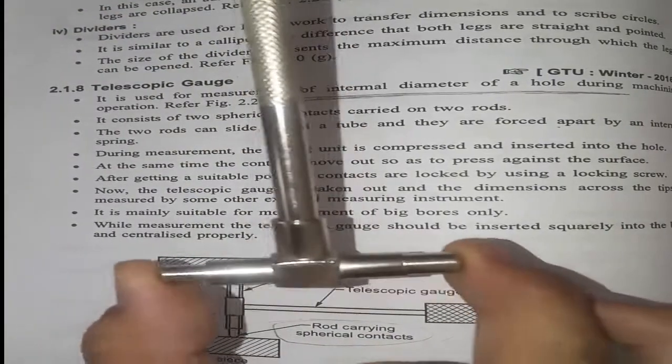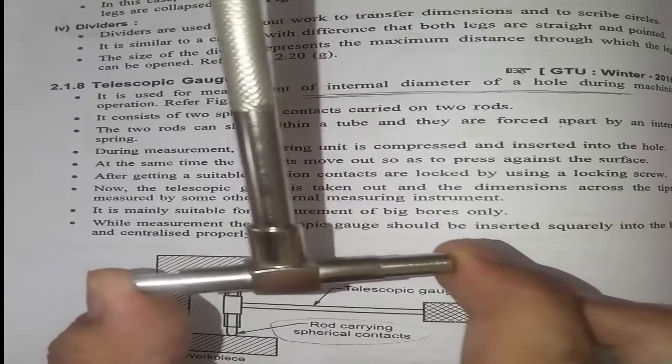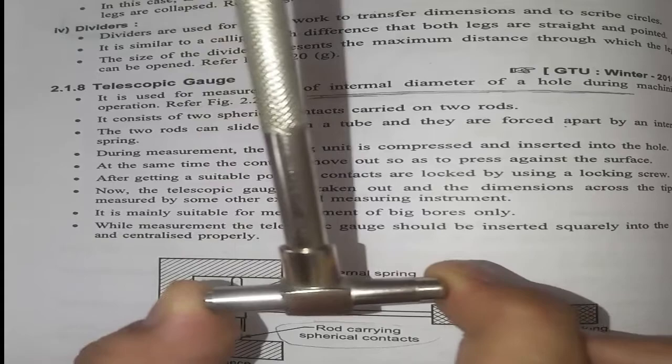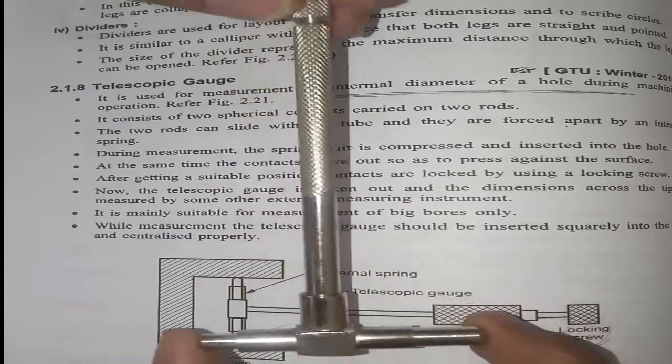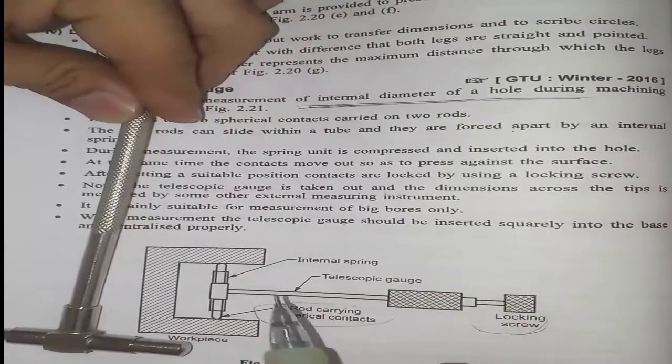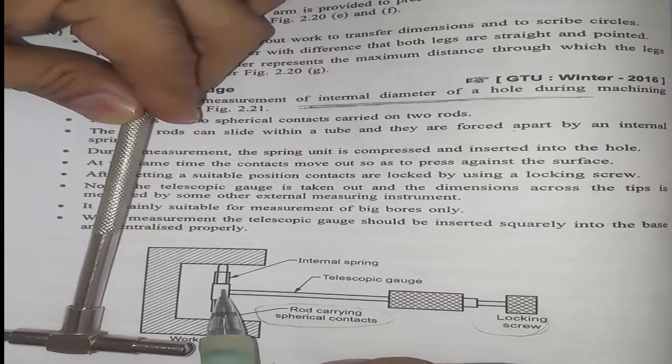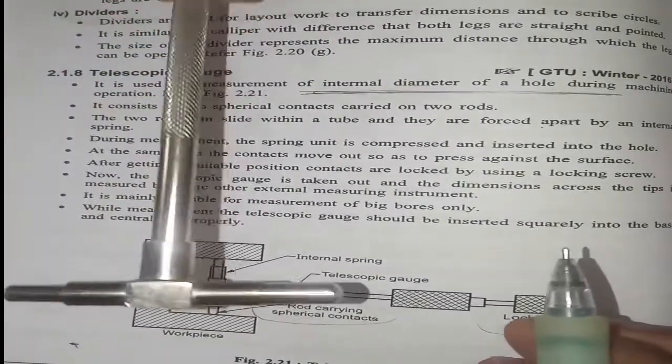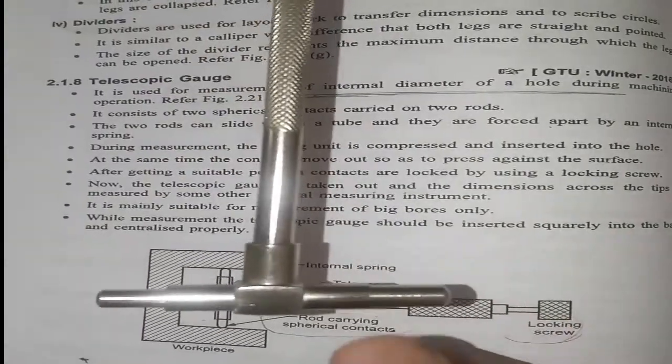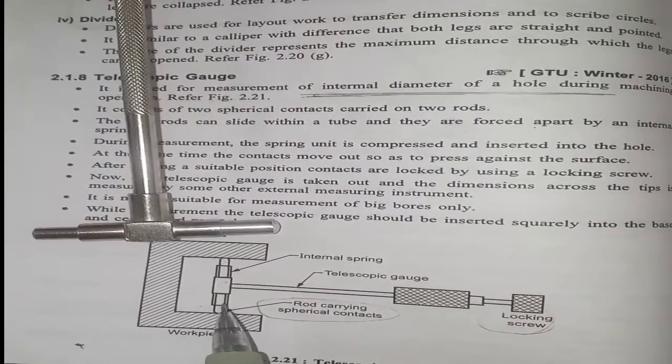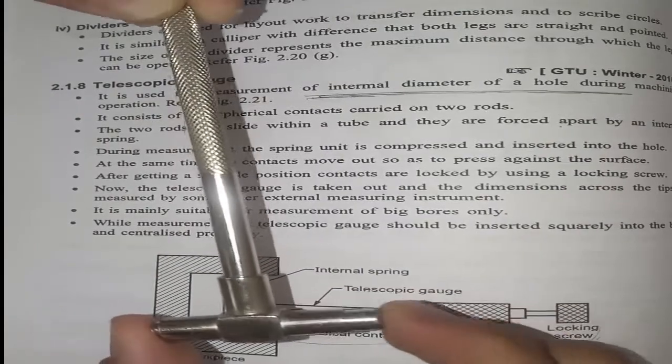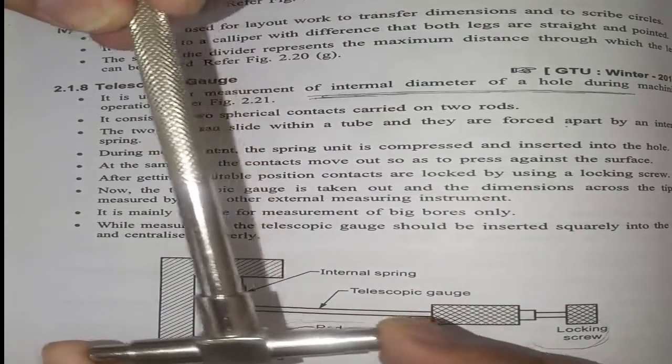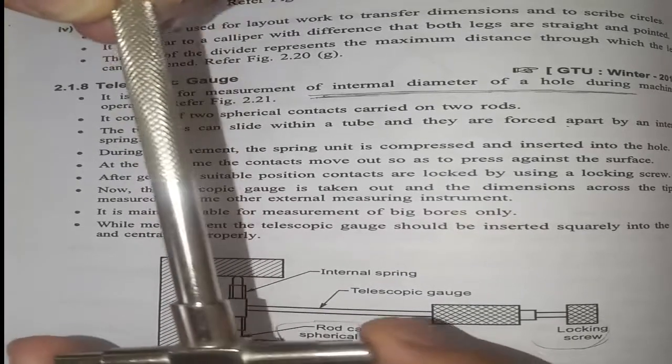Now how it works: first of all, we have to insert this telescopic gauge inside the cylinder. Then because of the spring, these two rods are movable. After inserting, these rods will expand like this.